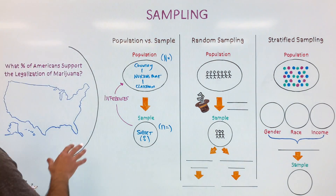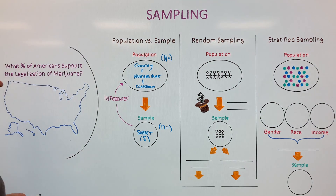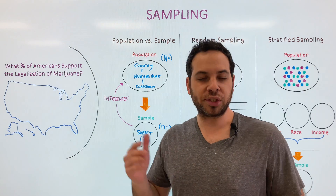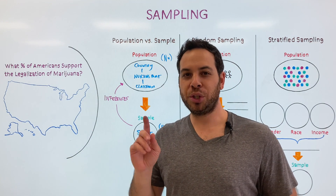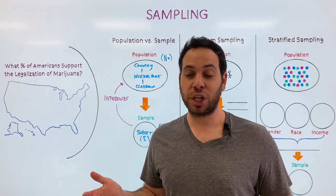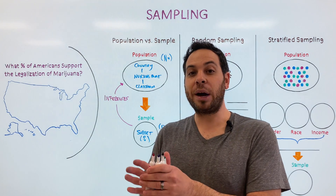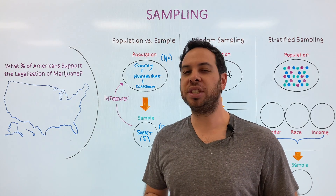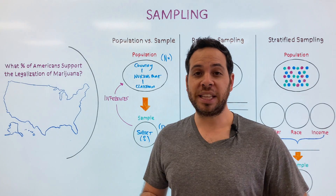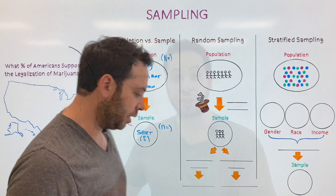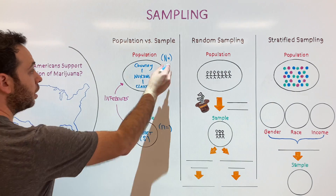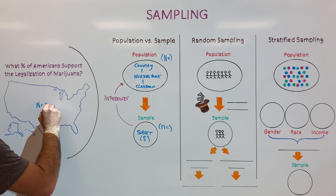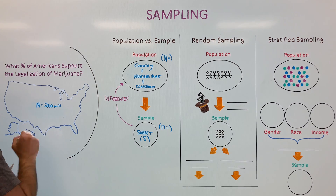So let's come back to our question: what percentage of Americans support the legalization of marijuana? What would be our population? A lot of you might think it's all Americans — but are we sure? Can you ask babies or toddlers that question? When you think about it, our population is actually everybody over the age of 18, because they can give consent and answer our questions. Our uppercase N — our population — is roughly 200 million Americans.